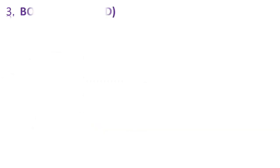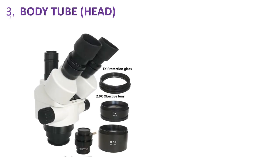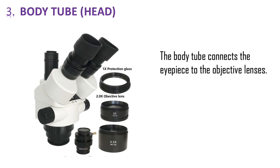And number 3 is body tube or head region of a microscope. It usually connects the eyepiece and the objective lenses in a microscope. And it is a connection between these two lens systems.